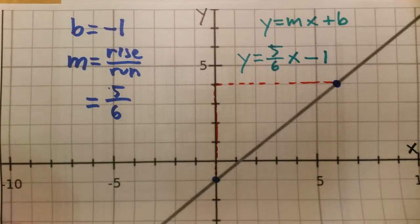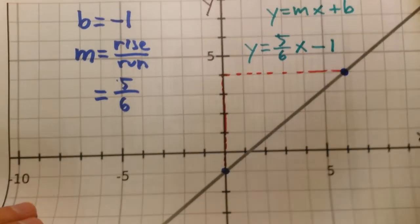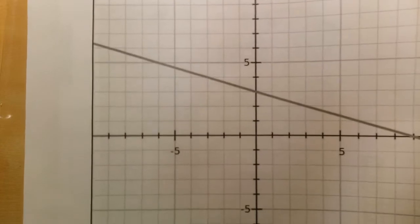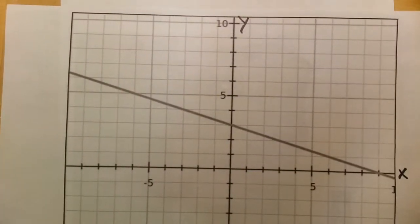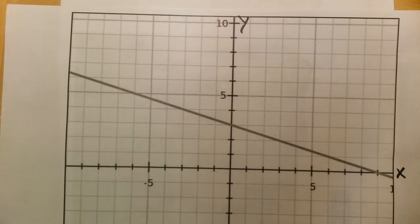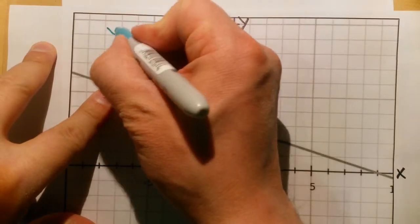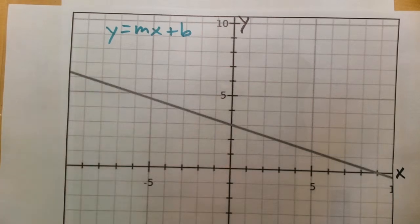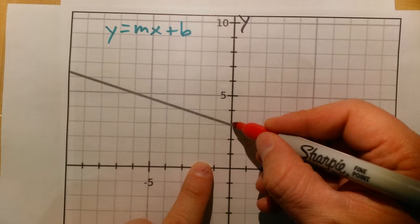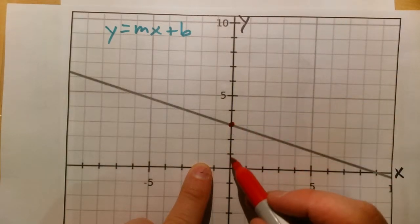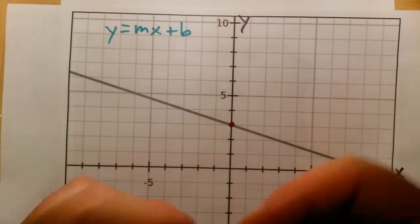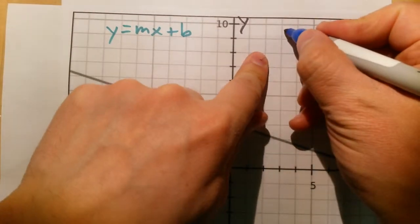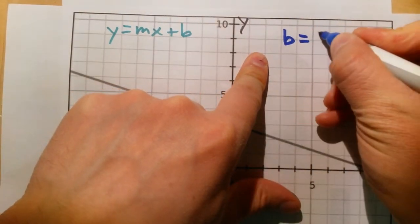Let's look at another example and go much quicker on this one. Now we have a line decreasing as we move to the right. So if it's decreasing as we move to the right, we expect this slope to be negative. Let's write down y equals mx plus b as a reference and collect our data. First, let's find the y-intercept — it's this one right here, and this point happens to be positive three.